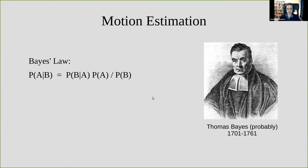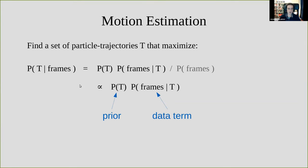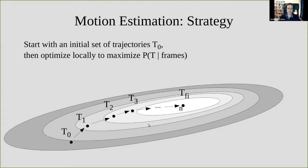Bayesian polishing is built around Bayes' law, which tells us the probability of some event A given some event B in terms of the inverse probability of B given A. In our context, we are looking for a set of particle trajectories T that are the most likely given the observed frames. This posterior probability of a set of trajectories is proportional to the prior probability of ever encountering those trajectories, times the likelihood that they would produce the observed frames. The overall strategy is one of local optimization: we initialize with some initial set of trajectories T₀ and follow the gradient upwards to maximize this posterior probability until we reach a local, and hopefully global, maximum.